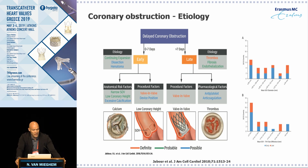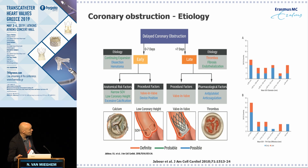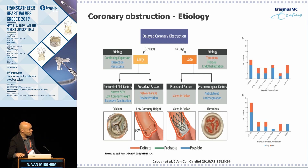This slide by Richard Jabbour summarizes what we're facing. If you look at delayed coronary obstruction — defined as coronary obstruction after exiting the cath lab — it can occur early, up to seven days, and late, after seven days. There are several etiologies: anatomical risk factors such as narrow sinus, low coronary height, and excessive calcium; procedural factors if you're embarking on a valve-in-valve procedure or aiming for a high device position.